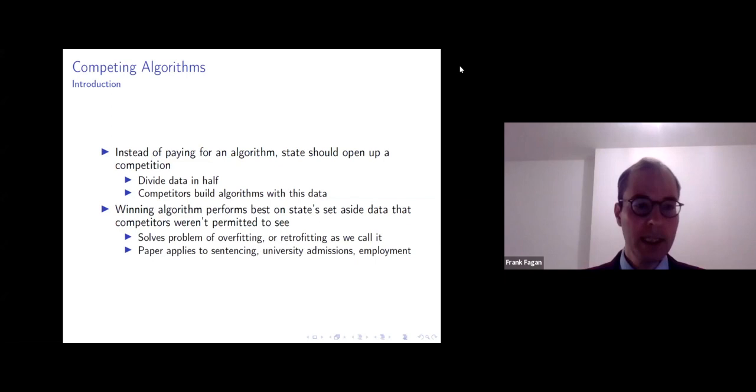So let me lead with my conclusion up front. What we advocate in the paper is that instead of the state like Wisconsin or these other states that are using algorithms for sentencing, instead of paying for a single algorithm, the state should instead open up a competition. They should divide the data, perhaps in half or some proportion, and release part of the data to the public who would submit competing algorithms.